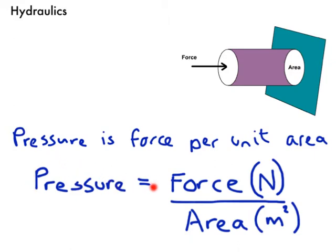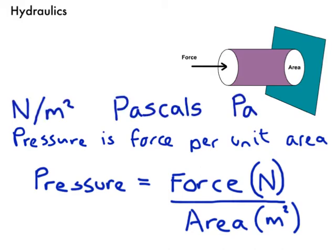So pressure here is equal to force measured in newtons divided by area, which is always measured, as far as we're concerned, in meters squared. Now that gives us a unit there, and it gives us a unit of newtons per meter squared. You can see that you've got newtons divided by meters squared, so we're getting a unit of newtons per meter squared. But we can also refer to pressure in terms of pascals, because one newton per meter squared is actually the same as one pascal, shown by the symbol capital P, little a there.